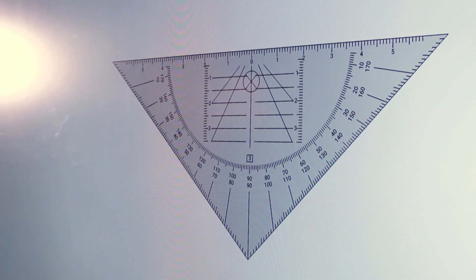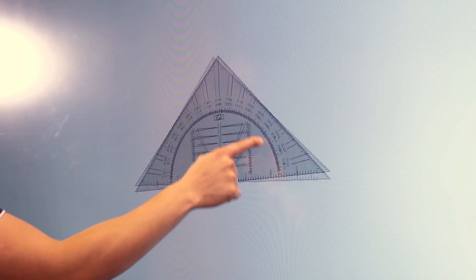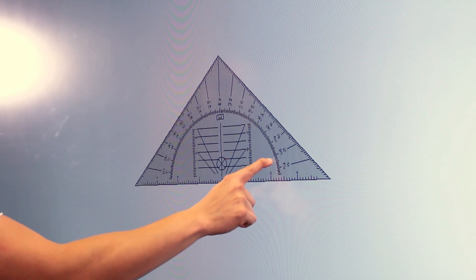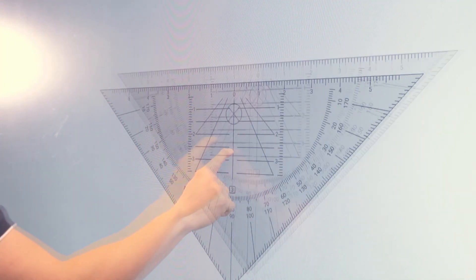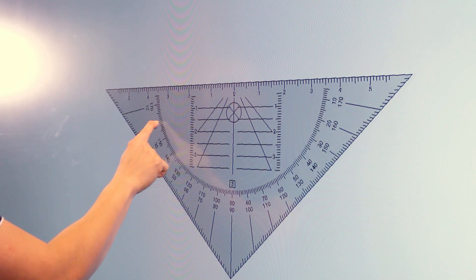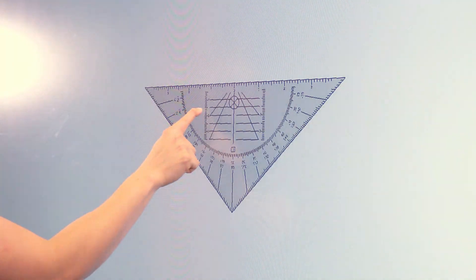The last math tool is a set square. Tapping and dragging from a blank area will rotate it while dragging from the lines will move it around the canvas. Similarly to the ruler, drag near a number to resize.